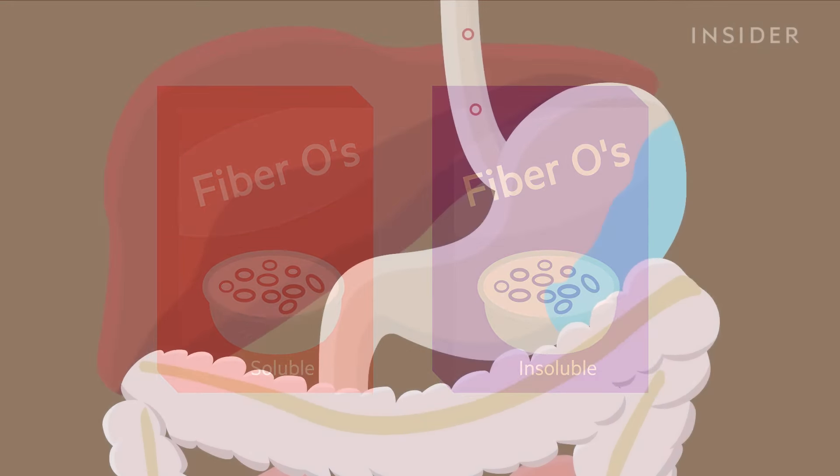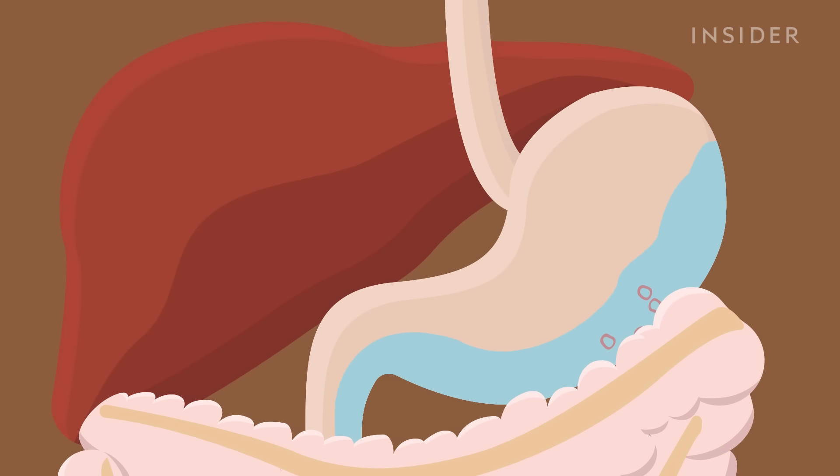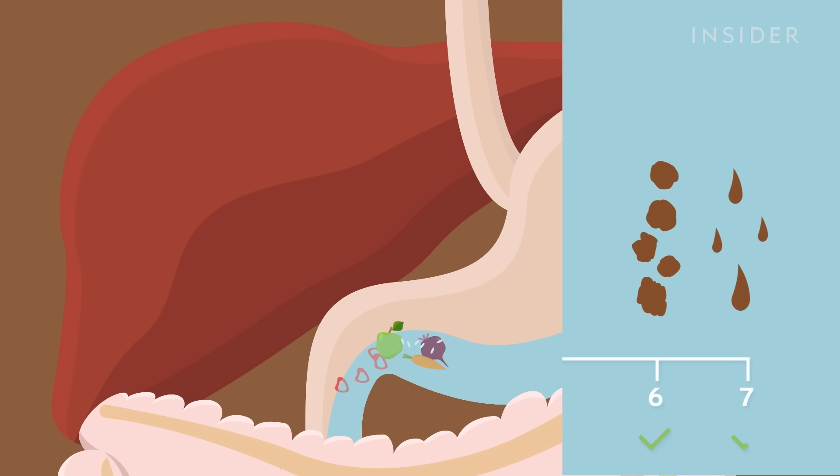Soluble fiber dissolves in water, turning gooey and spongy. It comes from things like fruit flesh, root vegetables, and cooked grains. This stuff takes its time sliding through your digestive tract, which helps regulate movements. You want to start introducing this type of fiber to your diet if you're hovering around a type 6 or 7.